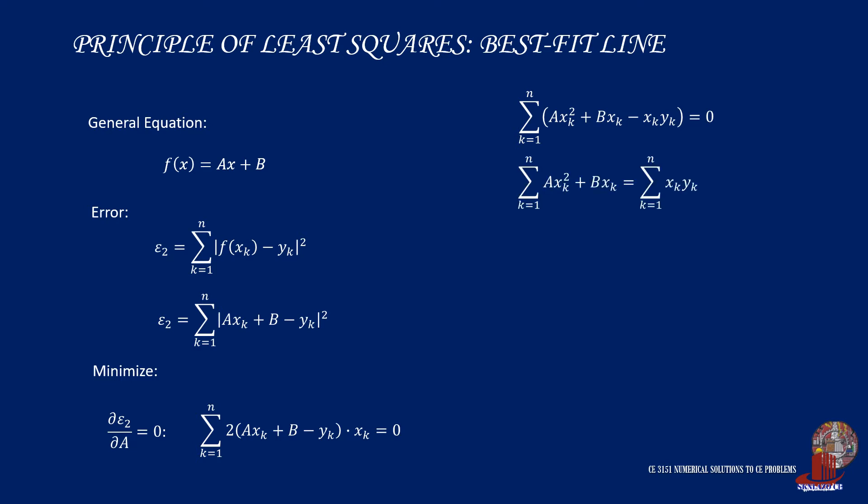Now transpose the third term to the other end so we get the summation of the quantity a times x sub k squared plus b times x sub k, which is equal to the summation of x sub k y sub k.